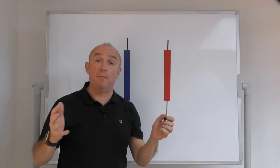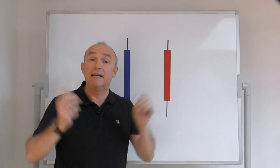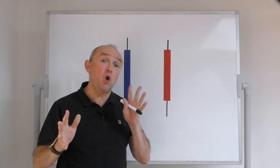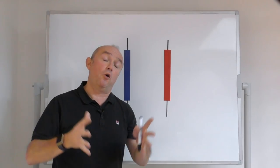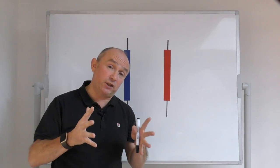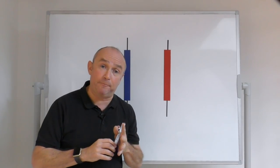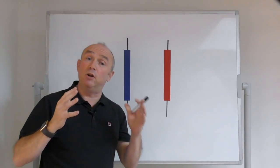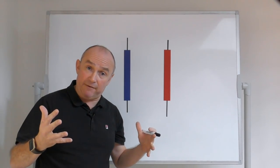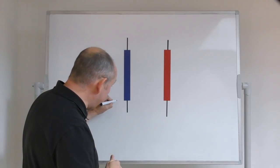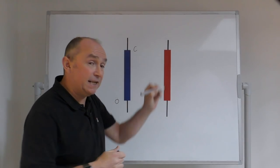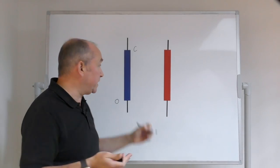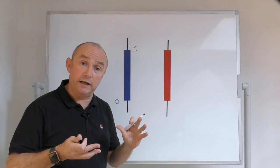Markets are moved by human behavior — buyers move the market up and sellers move the market down. The candlestick chart shows us basically who is winning the battle in a particular time period: are the buyers more in control or are the sellers? A candlestick chart is typically colored blue or green if the buyers have control. If the market opens down here and then moves all the way back up and closes higher, the candle will be colored blue.